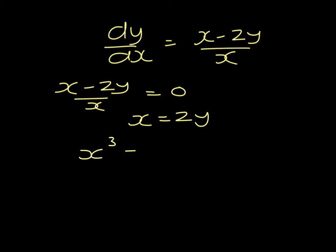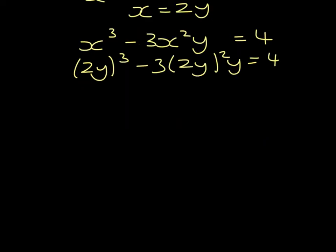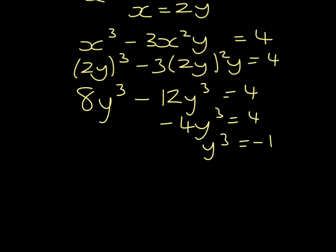x cubed minus 3x squared y equals 4. And we have that x equals 2y. So 2y cubed minus 3 times 2y squared y equals 4. So 8y cubed minus 12y cubed equals 4. Minus 4y cubed equals 4. Y cubed equals minus 1. So y would be minus 1 and x would be minus 2. So we have a stationary point at minus 2, minus 1.